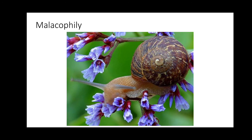Surprisingly, snails are also agents of pollination. Snails sometimes eat the petals of flowers, and as they reach into those plants, the anthers deposit pollen onto the snail's skin surface. When the snail then visits the next flower, the stigma captures all that pollen. This use of snails is called the malacophily method.